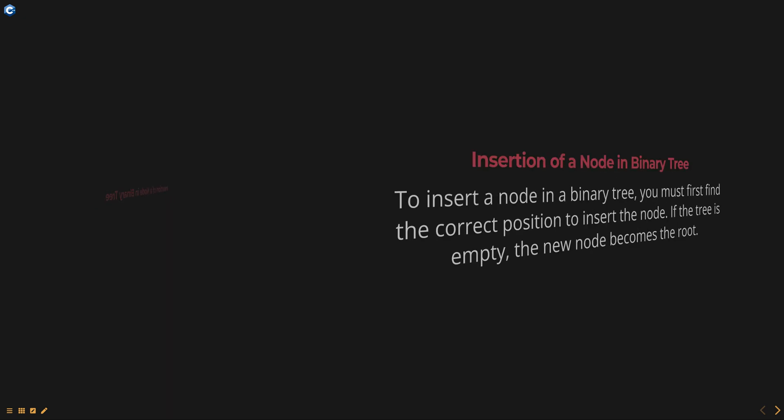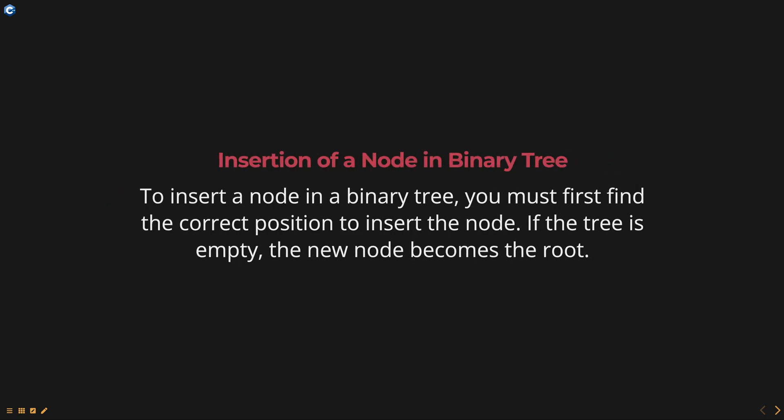To insert a node in a binary tree, you must first find the correct position to insert the node. If the tree is empty, the new node becomes the root.